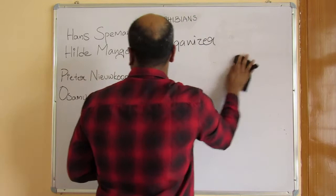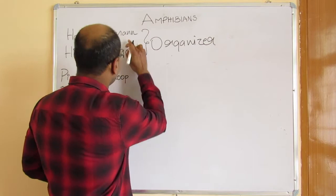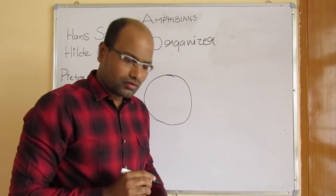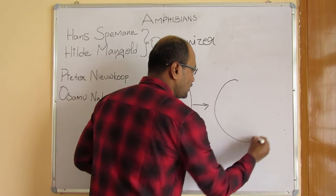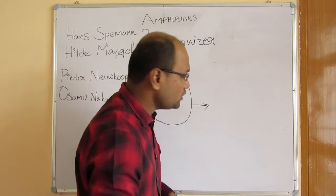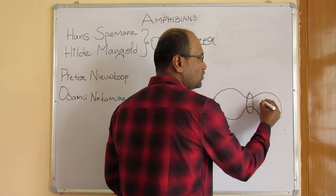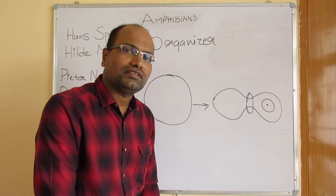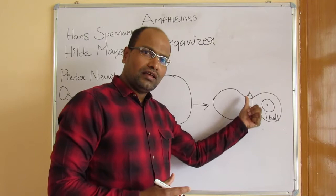Spemann conducted an experiment where he took a fertilized newt egg before the first cleavage occurred and tied it with a hair collected from his daughter, so that one part of the egg contained the complete nucleus and the other part contained only cytoplasm. After the 16th cell stage, he loosened the tight hair.